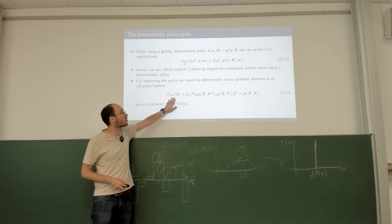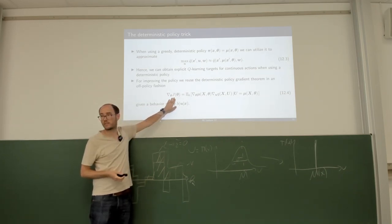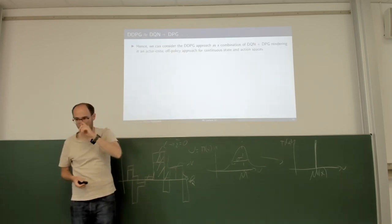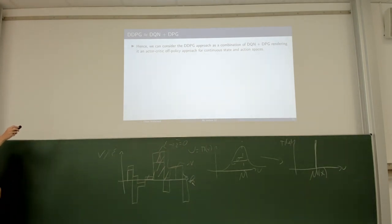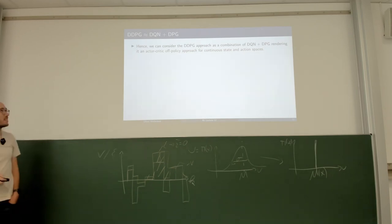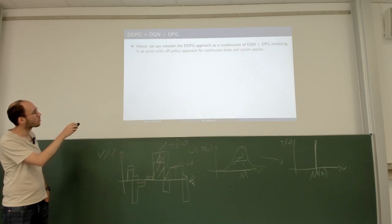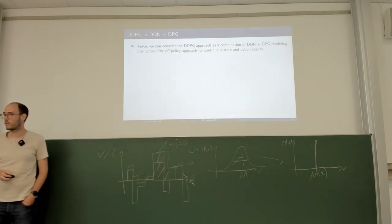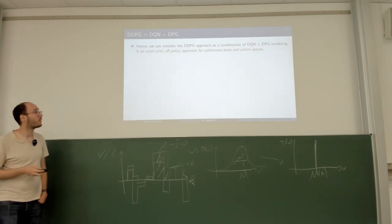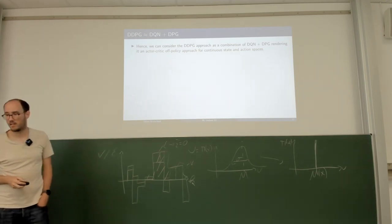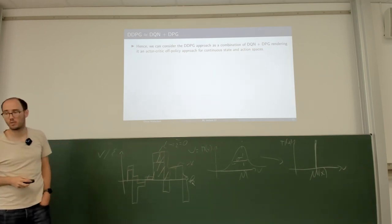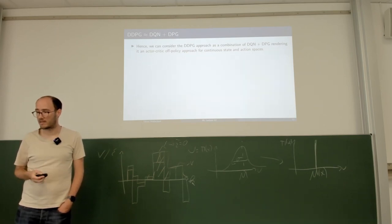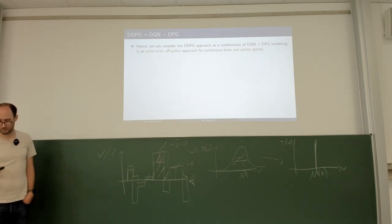To summarize: DDPG is essentially DQN plus DPG — deep Q-learning networks combined with a deterministic policy gradient — yielding an actor-critic approach that is off-policy capable (no need to learn on the same policy used for exploration) and capable of handling continuous state and action spaces.